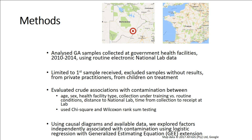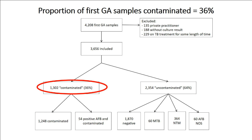There were approximately 4,200 first gastric aspirate samples, and we included just over 3,500 in our study. Disappointingly, we found that 36% — over a third of samples — were contaminated; 1,250 were contaminated. Of those, there were an additional 54 that were positive for AFB on smear but were also contaminated. Our clinical suspicion that there was a lot of contamination going on was unfortunately very true.